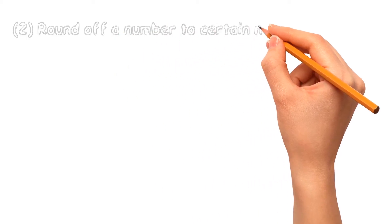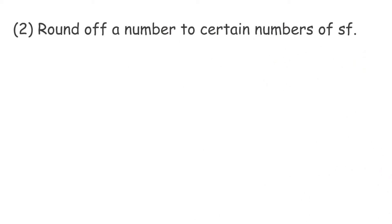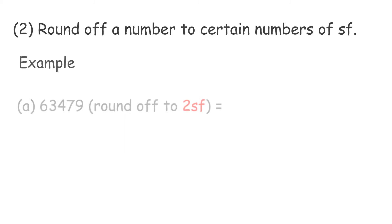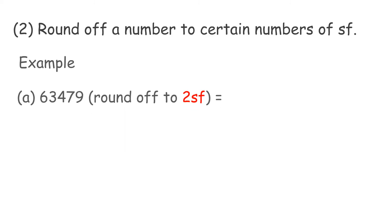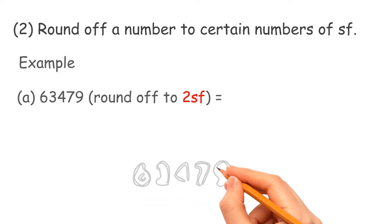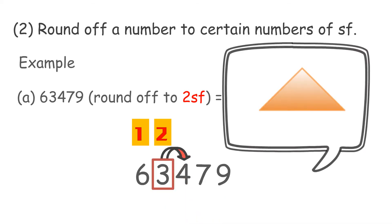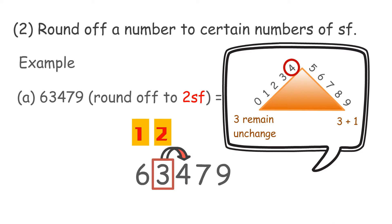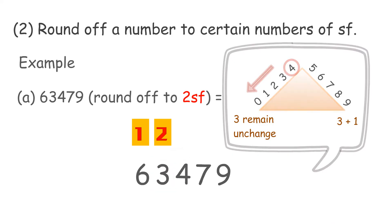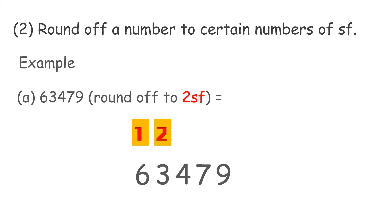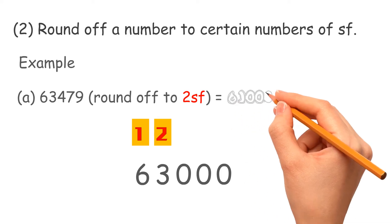Second: round off a number to a certain number of significant figures. Example A: count 1, 2 — the digit to be rounded off is 3. Look at the right-hand side digit of 3. It is 4; since 4 is less than 5, so 3 remains unchanged. Replace the 4, 7, and 9 with 0 as they are before the decimal point. Therefore, the answer is 63,000.